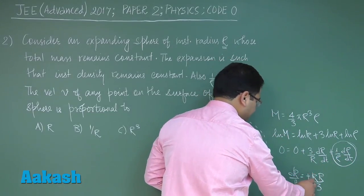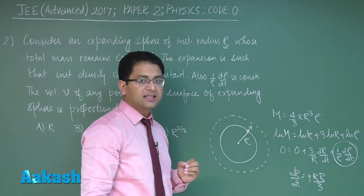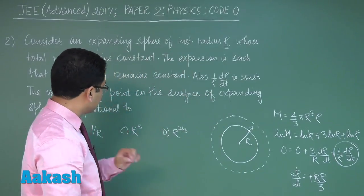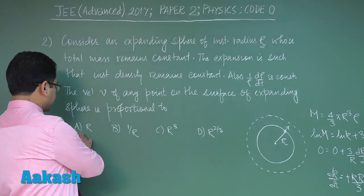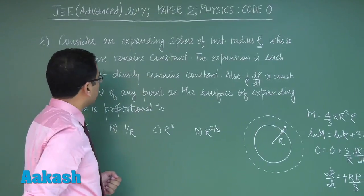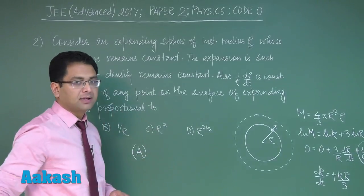If I write dρ/dt that would be minus k and ultimately that would be plus. However, this doesn't matter here because what we had to find is dR/dt's proportionality, and that is directly proportional to R. Question number two will have a correct option as option number A.